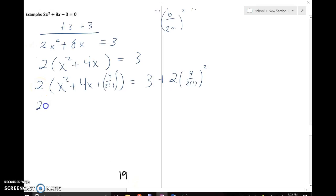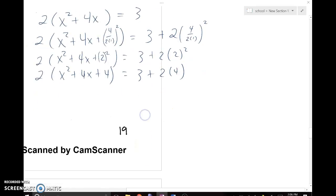Simplifying process now. x squared plus 4x. Now we've got 4 over 2 is 2, still got to square that thing. Equals 3 plus 2 times 2 squared. Continuing to simplify: x squared plus 4x plus 4 is 3 plus 2 times 4.